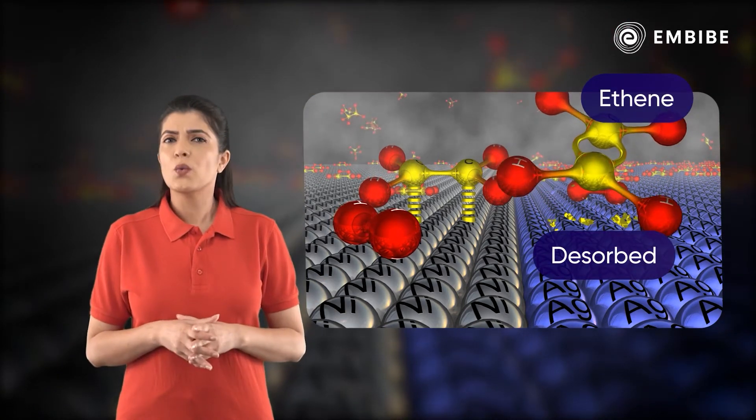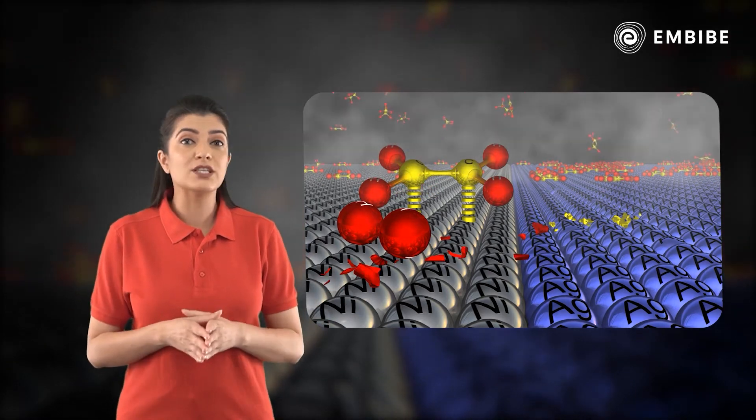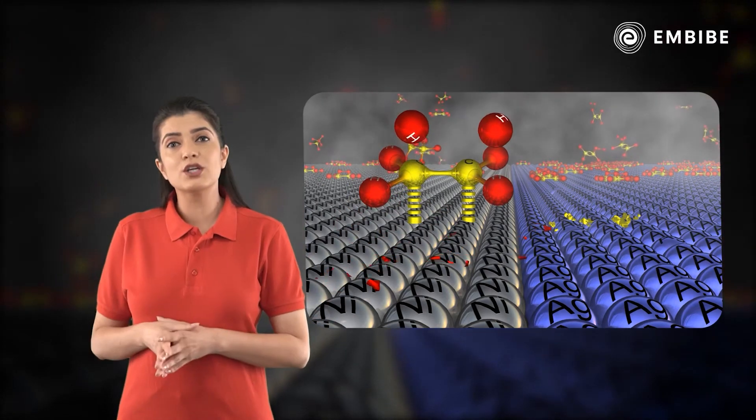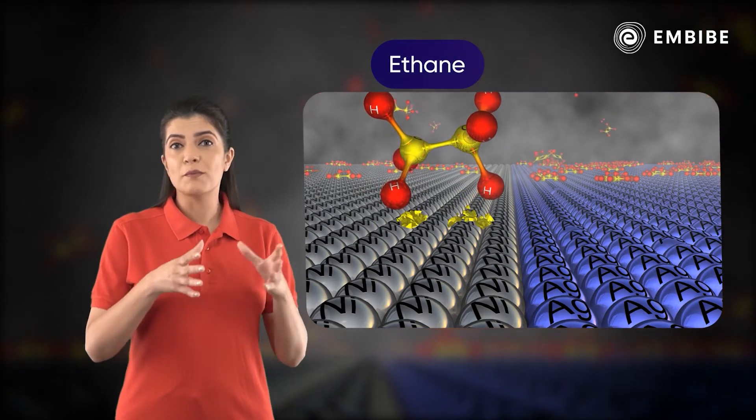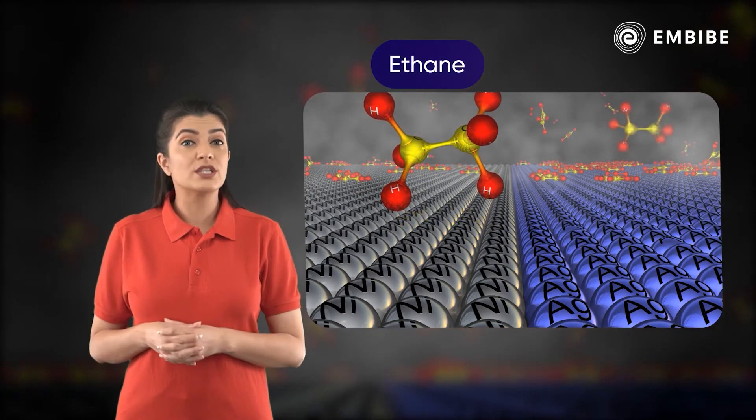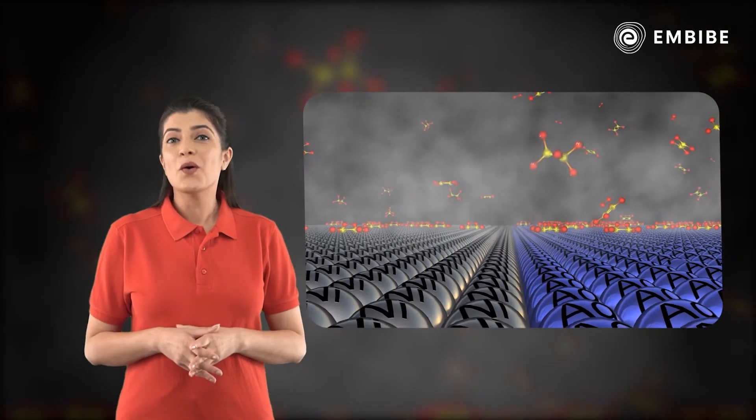Thus, the adsorbed ethene and hydrogen get desorbed from the surface of silver without getting converted into ethane. Whereas in case of nickel, the activated complex further undergoes addition reaction leading to the formation of ethane, which then gets desorbed from the nickel surface.